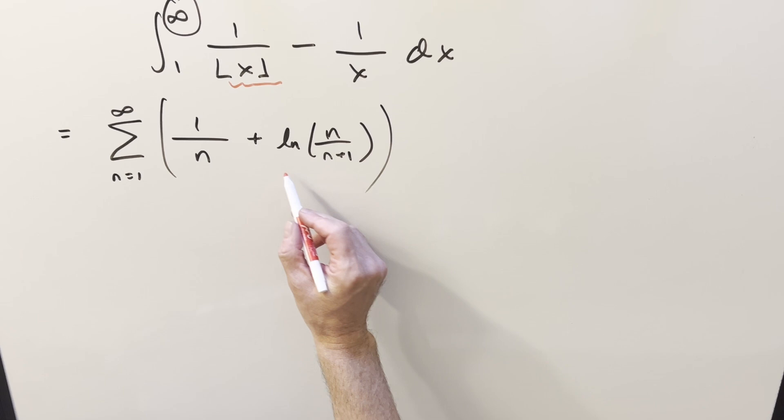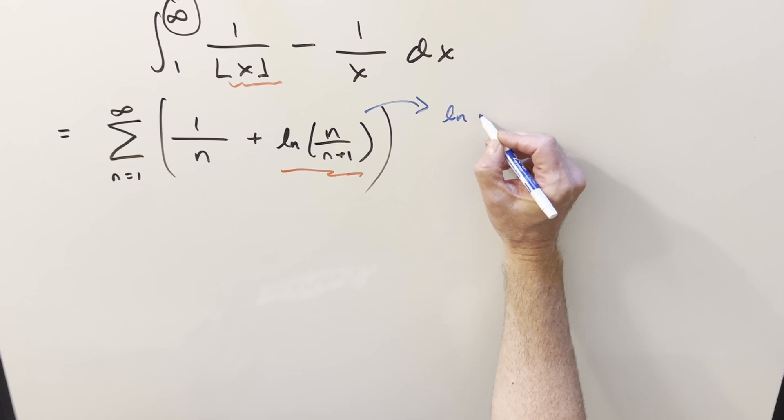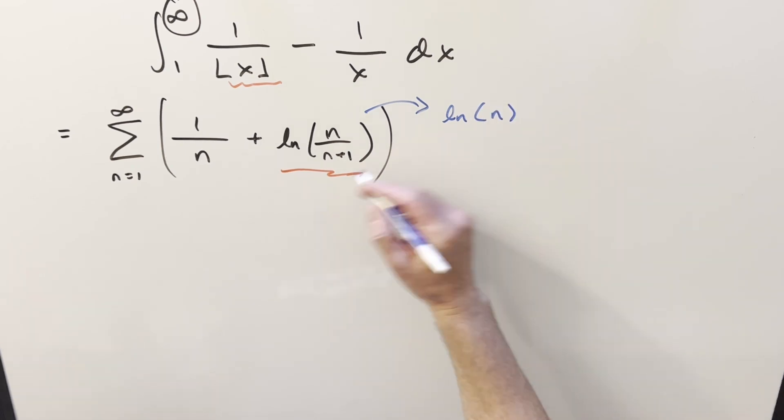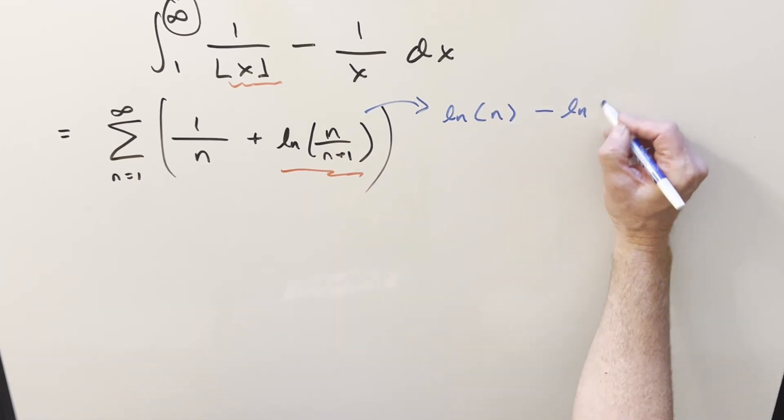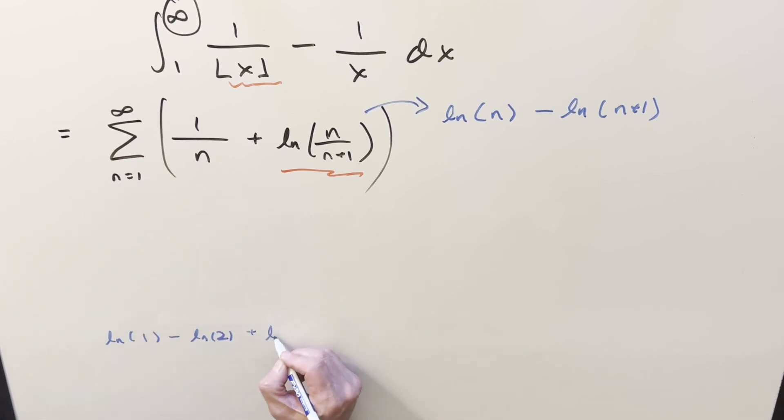So now to try to finish this off, let's first focus on this piece right here. And I'll kind of put it back the way we had it for a second, where we have, we can write this as natural log of n minus natural log n plus 1. And then let's just kind of plug in some terms in here, starting at 1. So what this is going to look like, natural log of 1 minus natural log of 2. And then when n is 2, you're going to have plus natural log of 2 minus natural log of 3 plus natural log of 3 minus natural log of 4.